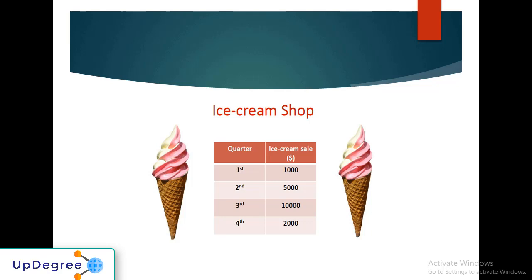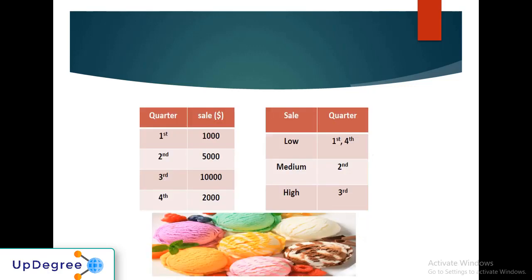Oh, these are numbers which reflect the sales of an ice cream shop quarter-wise. I can understand that for the first quarter the sales were around 1000, second quarter 5000, and so on. It makes more sense when compared to the previous table. I'm doing some interpretation here.